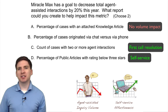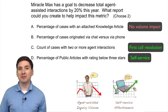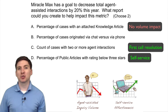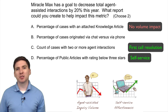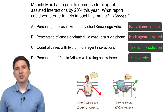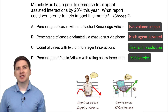Percentage of cases originated via chat versus phone would be useful if Max was trying to drive customers toward one or the other. Chat is usually a lower cost way to support customers, but it's still agent-assisted. And since we're going after reduction in agent-assisted interactions, we should be more interested in how often customers are serving themselves via web instead of worrying about phone versus chat.